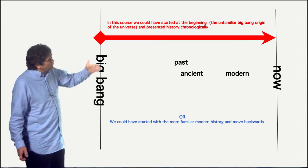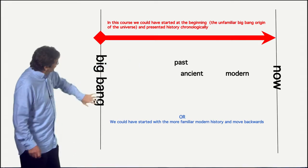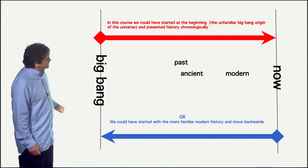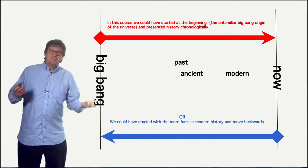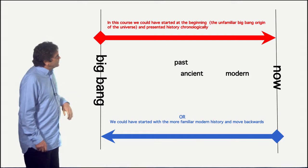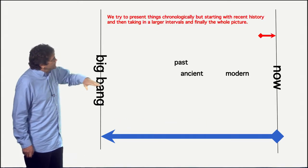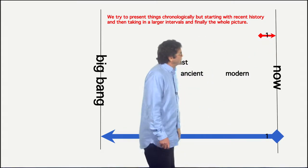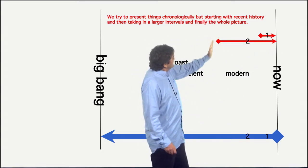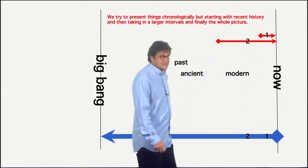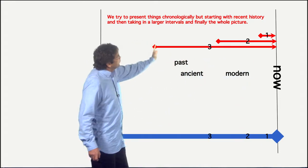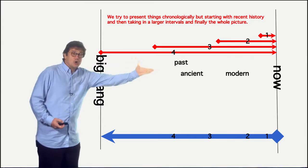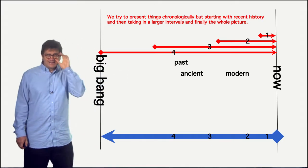Or you can start with the more familiar things and move to the less familiar, moving chronologically backwards in time. We've decided to mix these two approaches. We take a time interval in the recent past and then move forward, call that the first module. Then we go back even further and go forward in time, call that the second. Go even further, call it the third, and so on all the way to the last module.